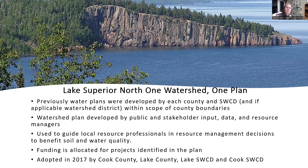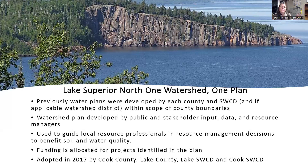The One Watershed One Plan planning documents were developed because previously water plans were developed by each county and soil water conservation district within county boundaries — it just stopped at a county boundary. It didn't address how water flows and interacts, because we know that water and things don't stop at a county line. So the concept was to do it on a watershed scale. Watershed plans are developed through public and stakeholder inputs, looking at RAPS report data, bringing people to the table to identify goals, concerns, areas to protect, and areas that need work. Those local guides bring everyone together to prioritize benefits for both soil and water quality.